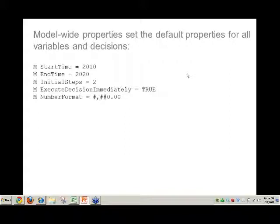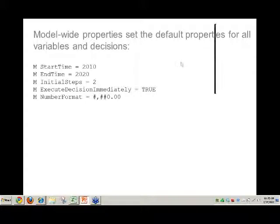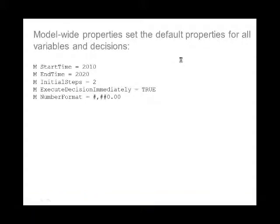Third on our list are model-wide properties, which set the default properties for all variables and decisions. For example, start time 2010, end time 2020, initial steps defining the number of steps run when the user first starts up. 'Execute decision immediately equals true' means a decision will instantaneously change values in the model — you can set the default here and override per decision. You can also set a default number format for the whole model.